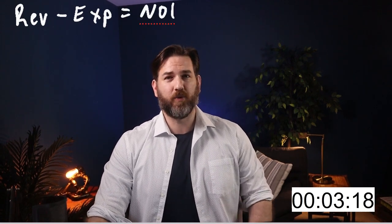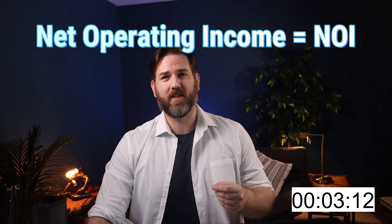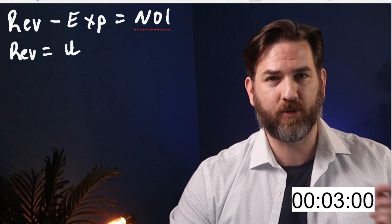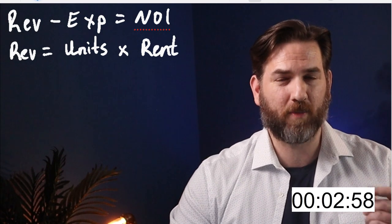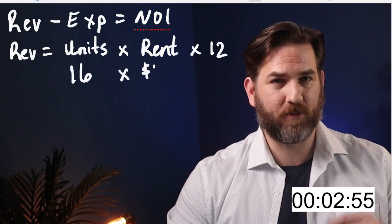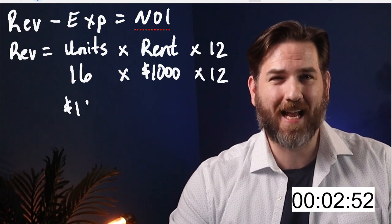Now we move on to step number two: run the numbers. Once we have the facts, it's time to calculate the key metrics. Always start with revenue minus expenses to calculate your net income. In commercial real estate, we refer to this as net operating income — the NOI. Let's calculate the revenue: the potential revenue is all units times rent times 12. This 16-unit complex at $1,000 monthly rent times 12 gives us a potential revenue of $192,000 a year.